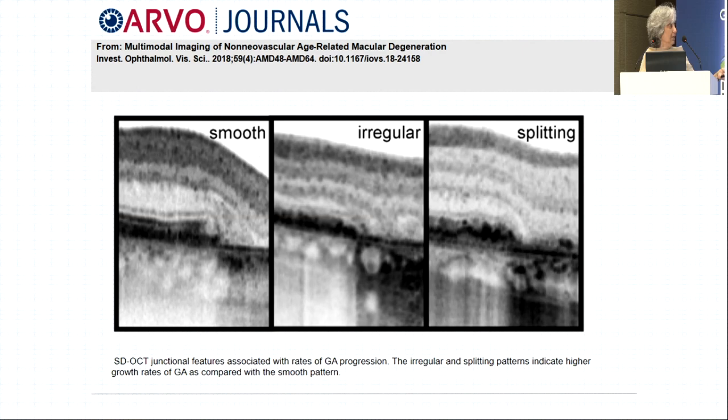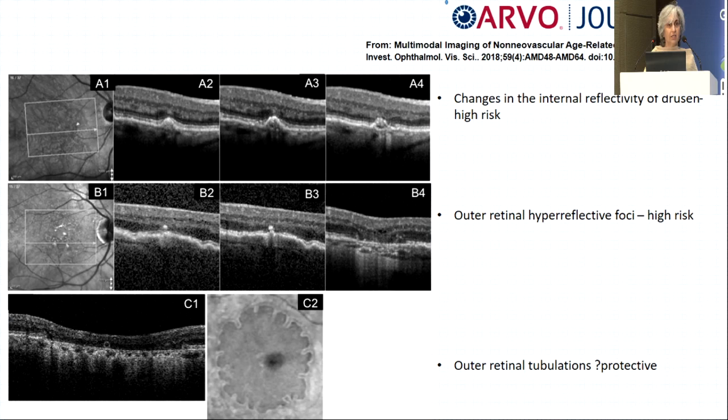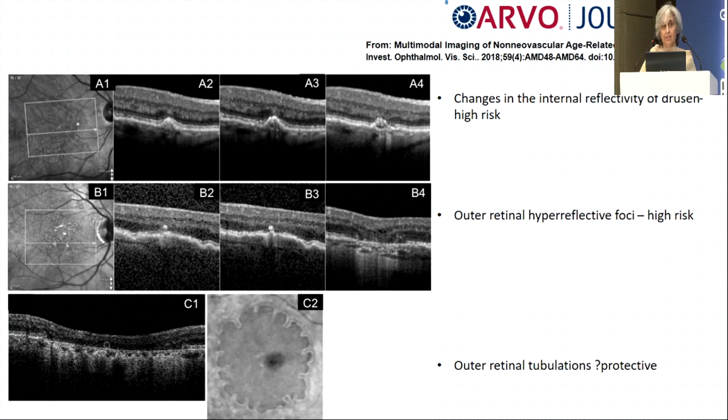Looking carefully at the OCT, changes in internal reflectivity of drusen are important — initially slightly hyper-reflective, then showing low reflectivity. Outer retinal hyper-reflective foci are high-risk for progression to atrophy. Outer retinal tubulations, though taken as a negative biomarker, are actually believed to be a protective factor when located at the edge of the lesion.